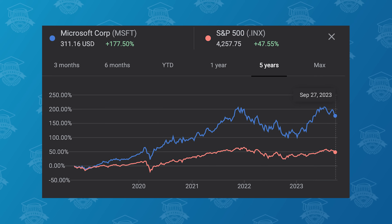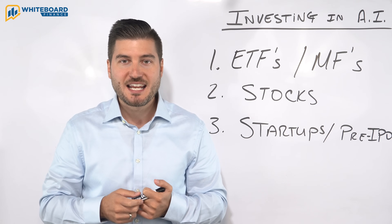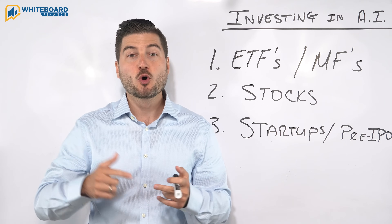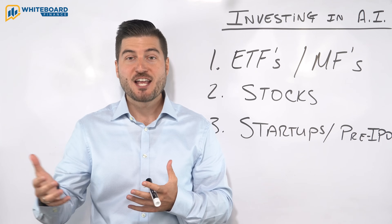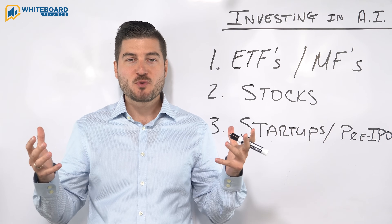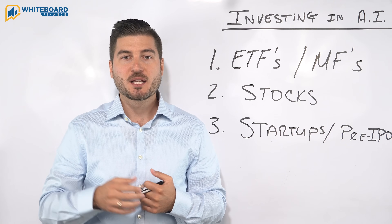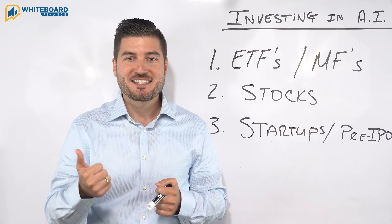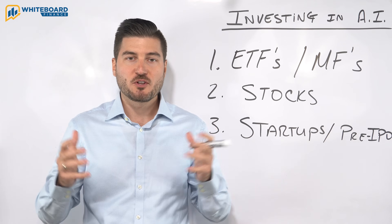The third stock is Microsoft. Microsoft has been a Whiteboard Finance fan favorite since basically 2017. They've invested $13 billion in AI initiatives, including an early $1 billion investment in OpenAI, who created ChatGPT. Microsoft has embedded AI into many of its systems, including the Bing search engine, Microsoft 365, its sales and marketing tools, Xbox, and a bunch of other products.